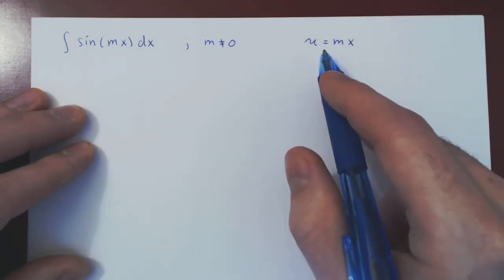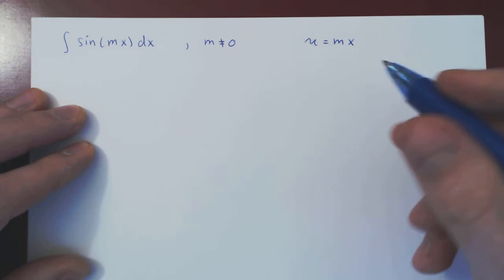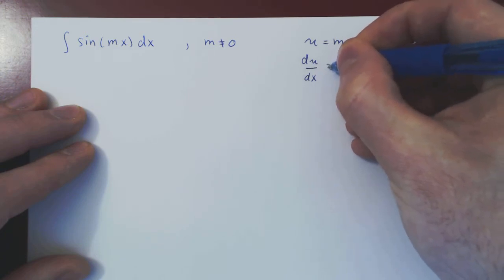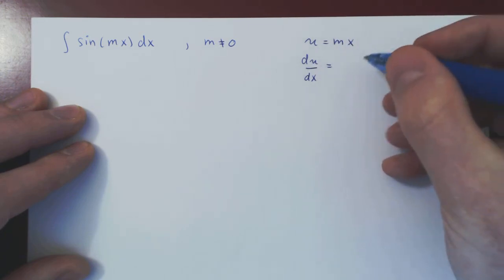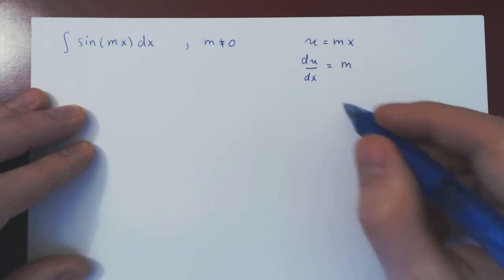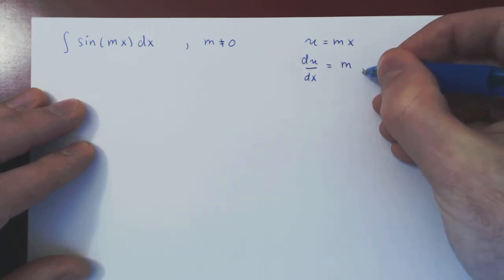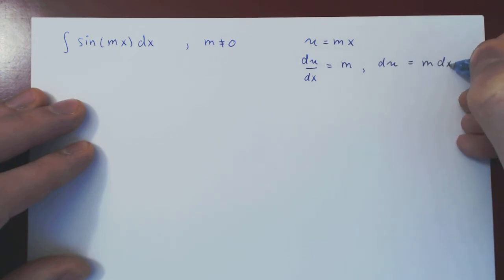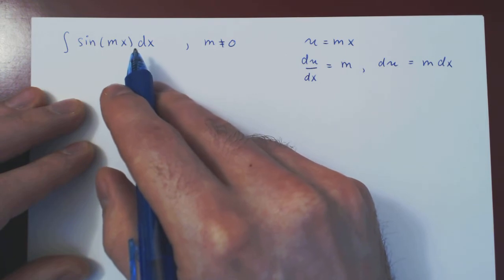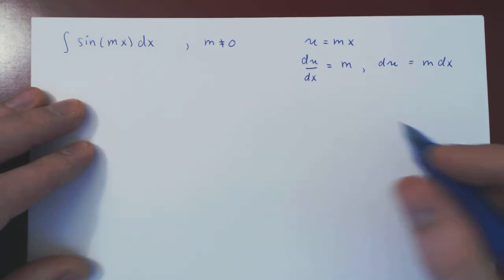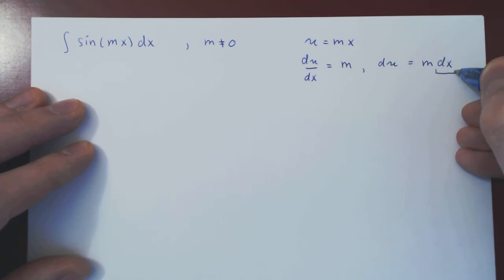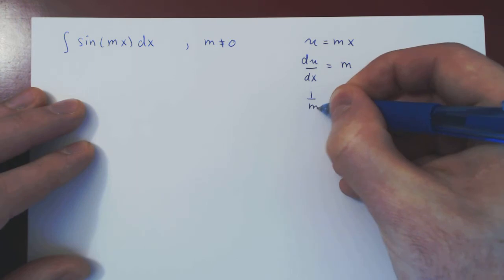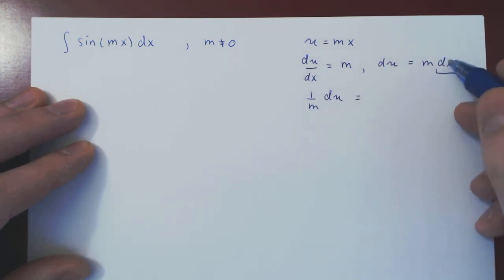To find dx as a function of du, we need to differentiate u with respect to x. The derivative of a constant times x is just a constant. So, multiplying across by dx, we find that du is m dx. But in our integral, we don't have m dx — we simply have dx. To isolate dx, we divide by m on both sides, so 1 over m du is equal to dx.